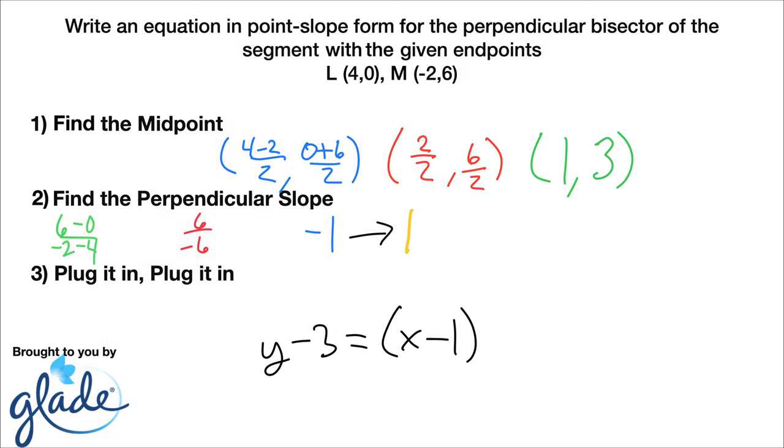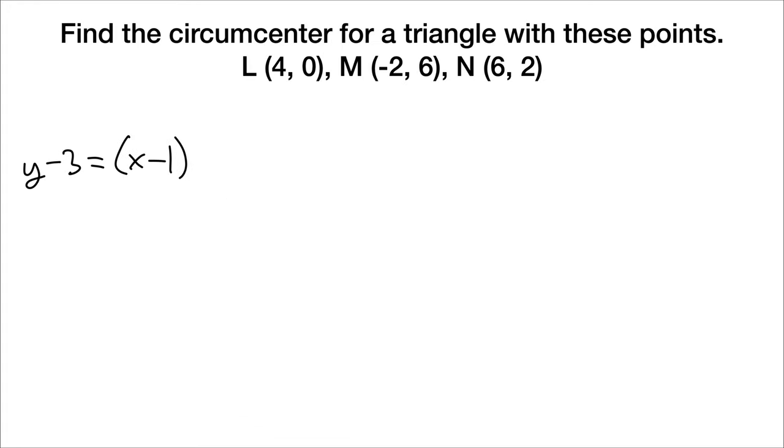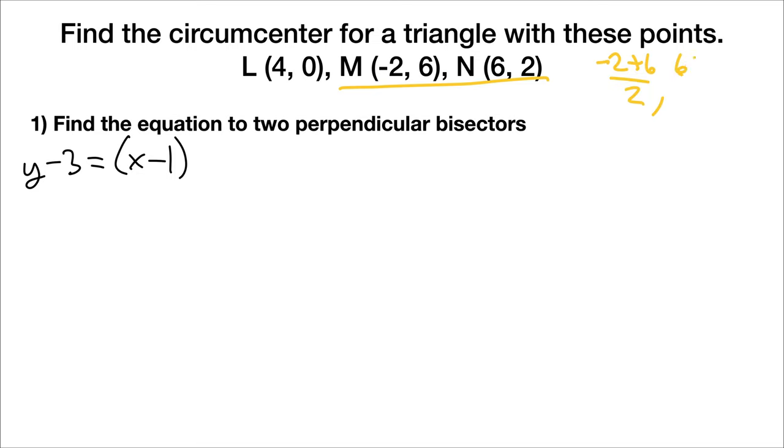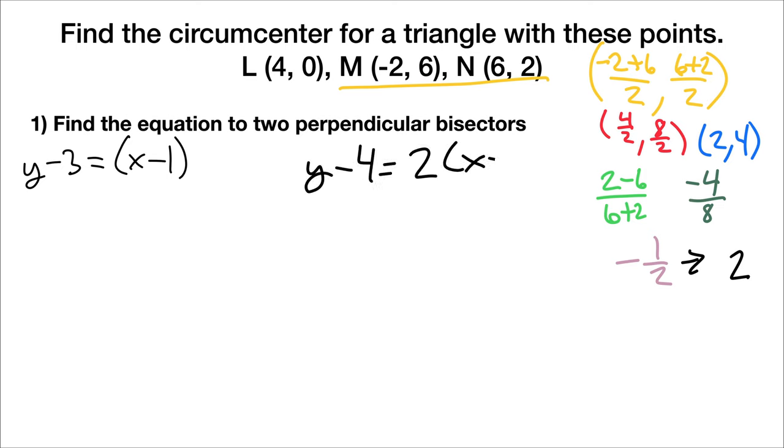So now that we have that slope, we have to find the circumcenter for a triangle with these points. Our first step is to find the equation of the two perpendicular bisectors. We already have one of them, but we need a second. So we go in, M N is what we're going to do. We could have also chosen to do L N, but I chose M N. So with M N, what we end up doing is, first we find our midpoint. And negative 2 plus 6, 6 plus 2, so that becomes 4 and 8, or 2, 4. Then we find our slope. Our slope ends up being negative 1 half, which becomes a positive 2, meaning our final equation is y minus 4 is equal to 2 times x minus 2.